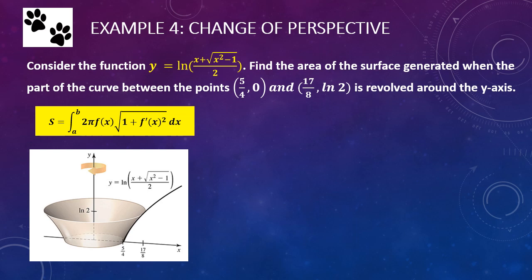We have one more example from this chapter, and it's a good one because you need to be aware of which axis you're revolving around. Remember that our surface area formula applies over a differentiable interval and is revolved around x. So if we're revolving around y, as we are in this problem, we need to change our function so that we no longer have functions of x, but functions of y and the derivative of the function of y. We just have to change f of x to g of y and f prime of x to g prime of y.